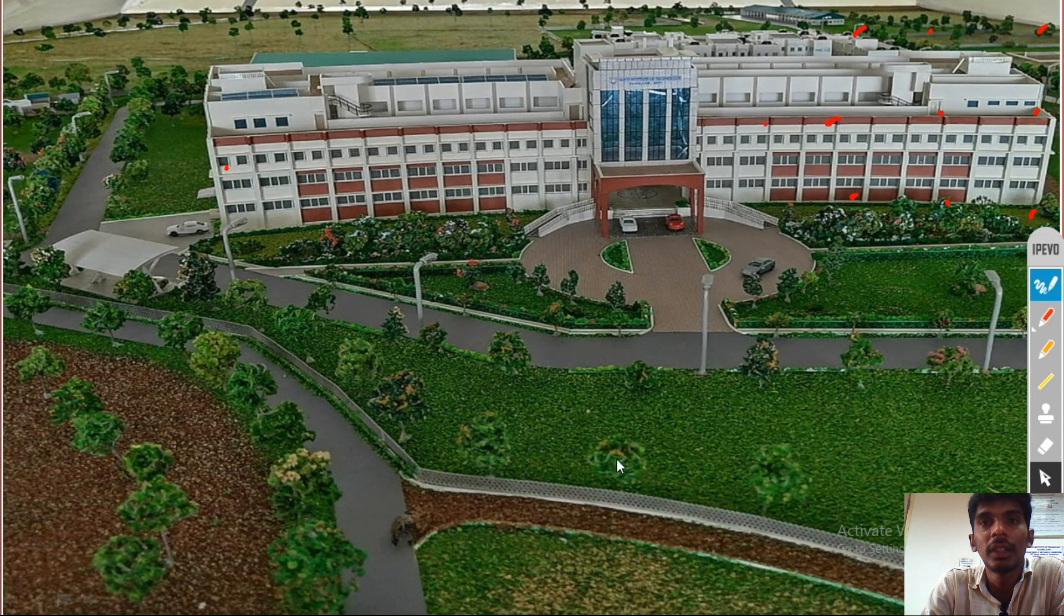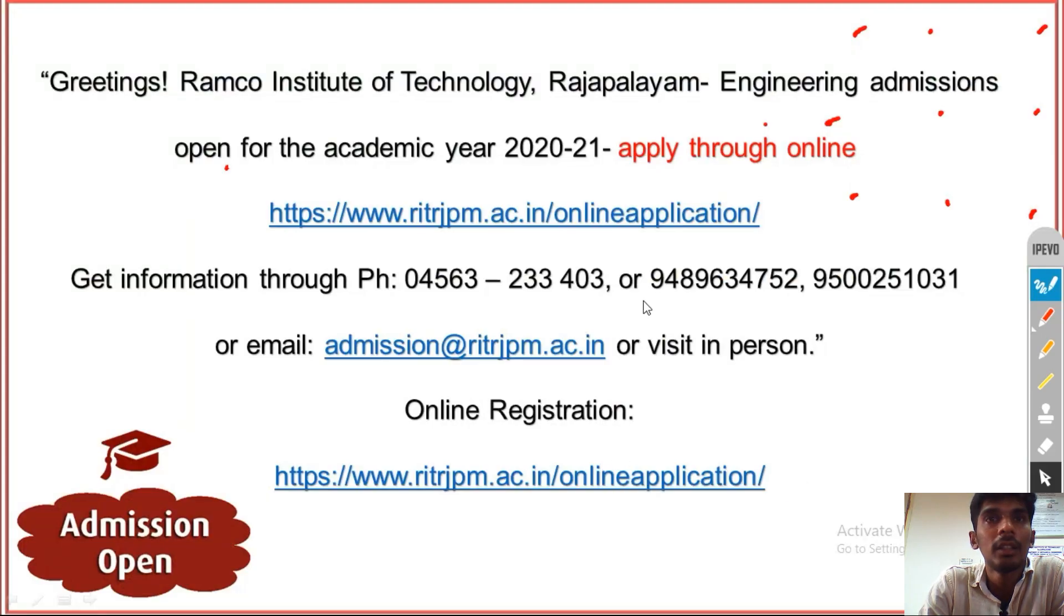Thank you. These are overall view of the structure of RIT. Currently your admission is going on. You can access this website ritrjpm.ac.in. You can access our upcoming programs and also what is going on in our college. If you want to enquire about admission and also other things, you can contact these numbers. You can apply online also by using this link. Thank you.